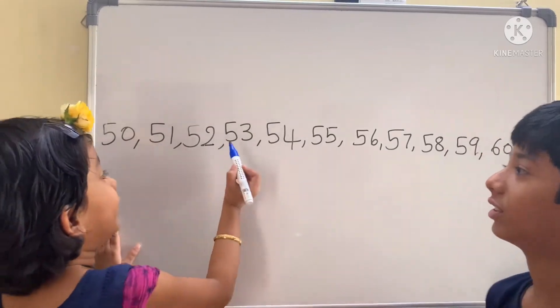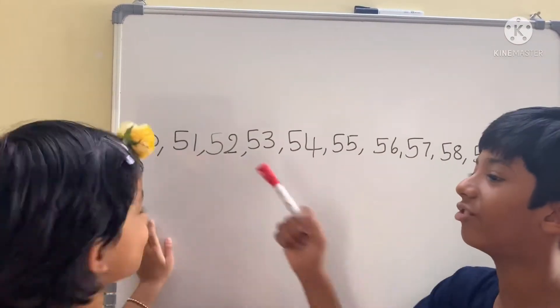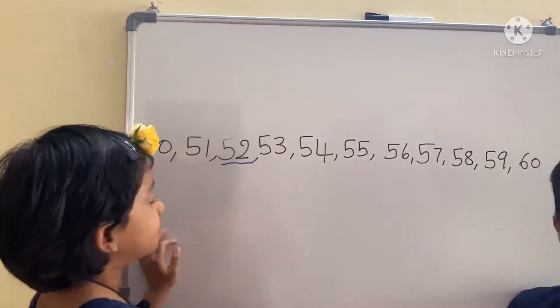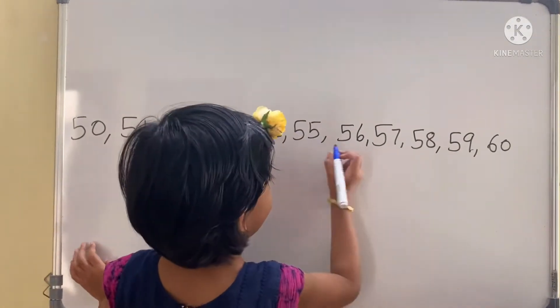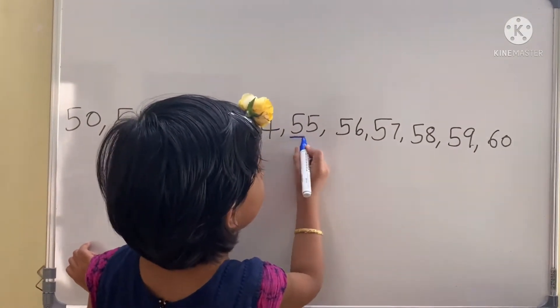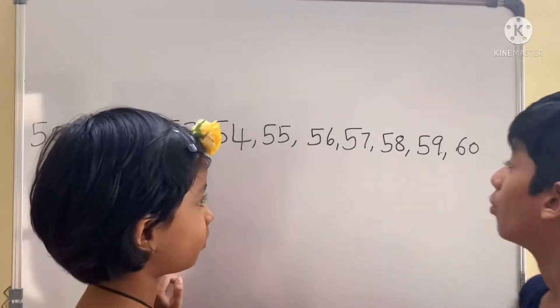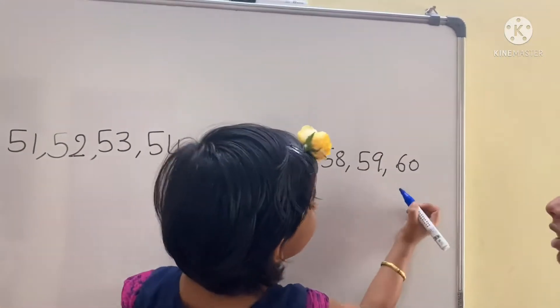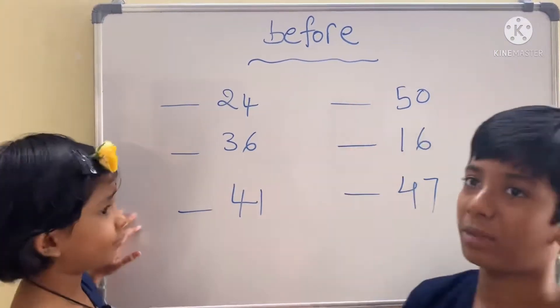55. So baby, what is after 59? 60. Now we are going to do before numbers. Can you help me children to do these sums?